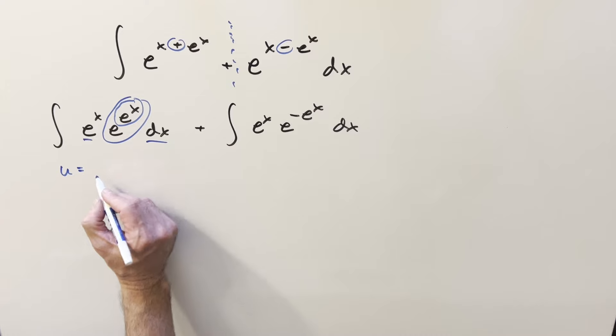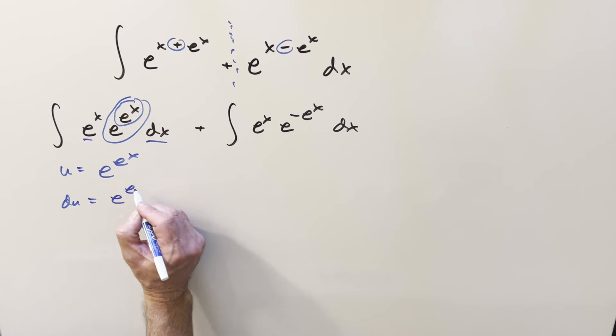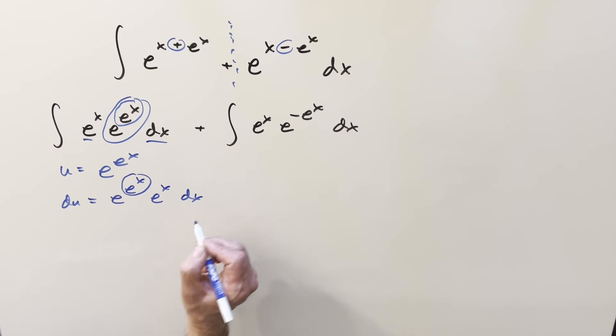So if I do my substitution, u equal to e to the e to the x. When we take a derivative, du is going to be, we get the whole thing back, e to the e to the x. Chain rule on this part is just e to the x dx.